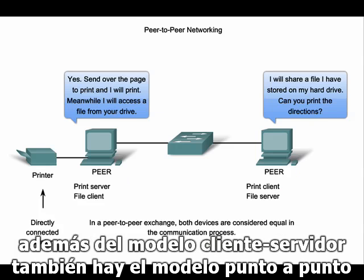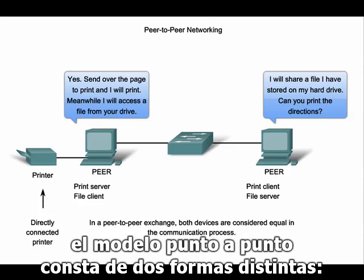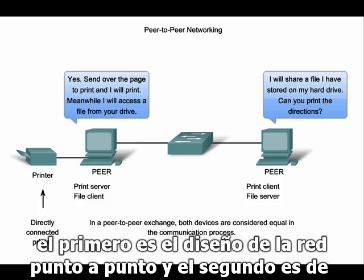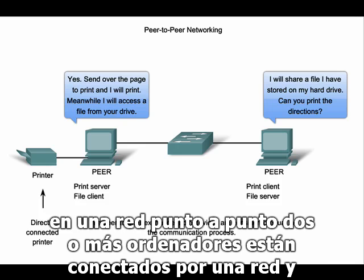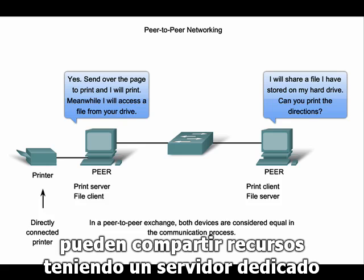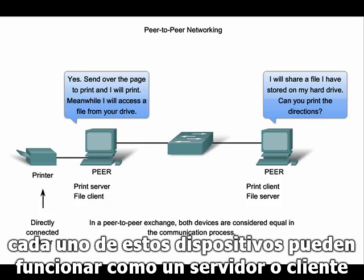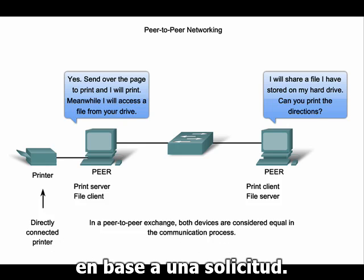In addition to the client-server model, there is also a peer-to-peer model. Peer-to-peer networking involves two distinct forms: peer-to-peer network design and peer-to-peer applications. In a peer-to-peer network, two or more computers are connected via a network and can share resources without a dedicated server. Each of these end devices can function as either a server or a client on a per-request basis.